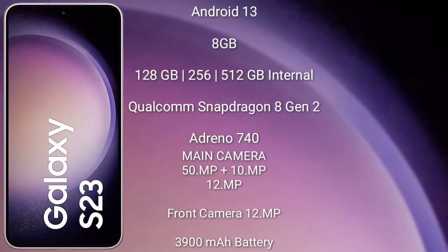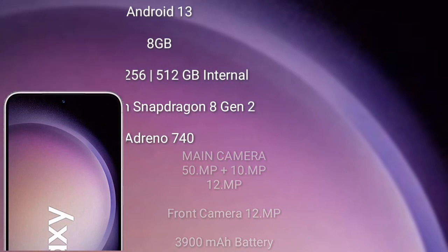Samsung Galaxy S23 runs on the Android 13 operating system. It comes with 8GB and 12GB RAM, and 128GB, 256GB, and 512GB internal storage. It features a Qualcomm Snapdragon 8 Gen 2 processor with GPU Adreno 740. The Samsung Galaxy S23 has a rear triple camera setup of 50MP plus 10MP plus 12MP, and its front camera is 12MP. It has a 3,900mAh battery with 25W fast charging support.